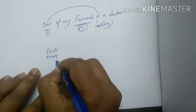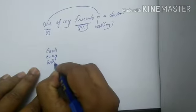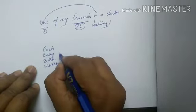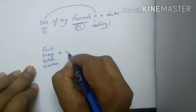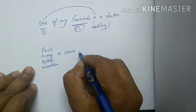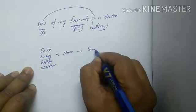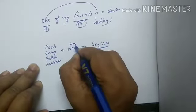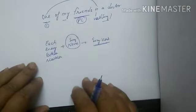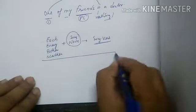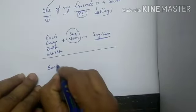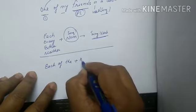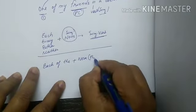Let us sum up. Each, every, either, neither — followed directly by a noun: both noun and verb are singular. If 'of' and 'the' follow — each of the, either of the, neither of the — the noun will become plural, but the verb will remain singular. Similarly, 'one of the' also follows this pattern: noun plural, verb singular.